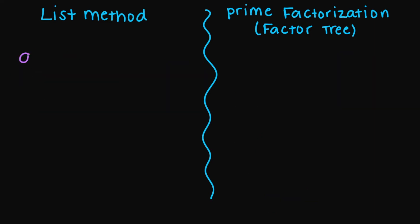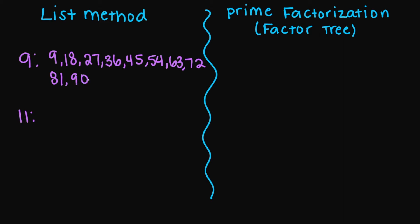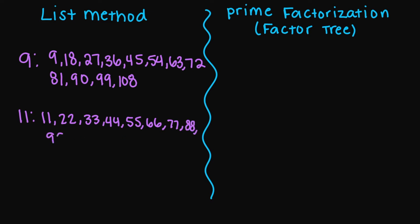So let's find the LCM for nine and 11. For my nine, we have 9, 18, 27, 36, 45, 54, 63, 72, 81, 90, 99, and 108. And for my 11, we have 11, 22, 33, 44, 55, 66, 77, 88, 99, and 110. The smallest common multiple — your least common multiple — that both of these numbers share is going to be 99. I have a 99 here and also a 99 here. So your LCM is 99.